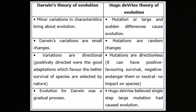The next topic is very important for your board examination - you may be asked to differentiate between Darwin's theory and Hugo de Vries' theory. According to Darwin, minor variations in characteristics bring about evolution, whereas according to Hugo de Vries, mutation or large sudden differences cause evolution. Darwin's variations are small changes; mutations are large or random changes. Variations are always directional; mutations are directionless, that is random. Evolution for Darwin was a gradual process; Hugo de Vries believed single step large mutations like saltation caused evolution. Four points are expected, mostly asked as a two-mark question.